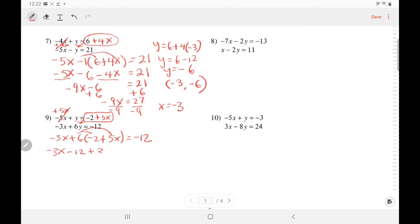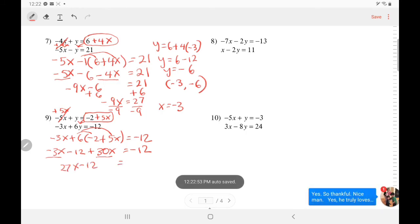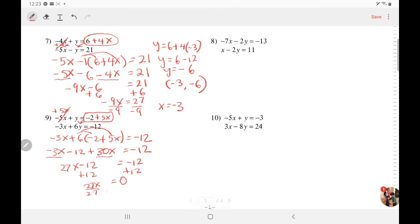So 6 times negative 2 is negative 12. 6 times 5x is 30x equals negative 12. Add like terms negative 3x positive 30x. When you add opposites you subtract. So I have 27x minus 12 equals negative 12. Add 12. So 27x equals 0.